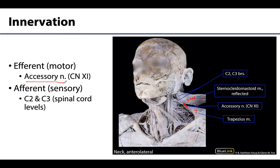Most typically, a muscle is both efferently and afferently served by the same nerve, meaning that nerve will have both motor and sensory fibers wrapped up together. But this is not the case for the accessory nerve, so we need afferent innervation from another source. When discussing sensory or afferent innervation regarding muscles, this is the means by which the central nervous system can understand what is going on with that muscle — where it is located, whether it is moving, things like that.